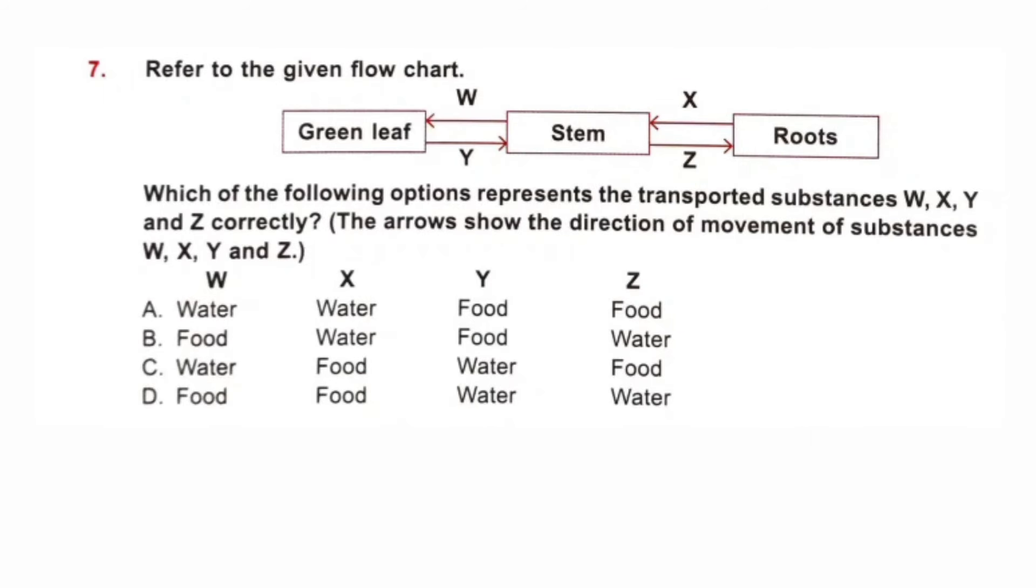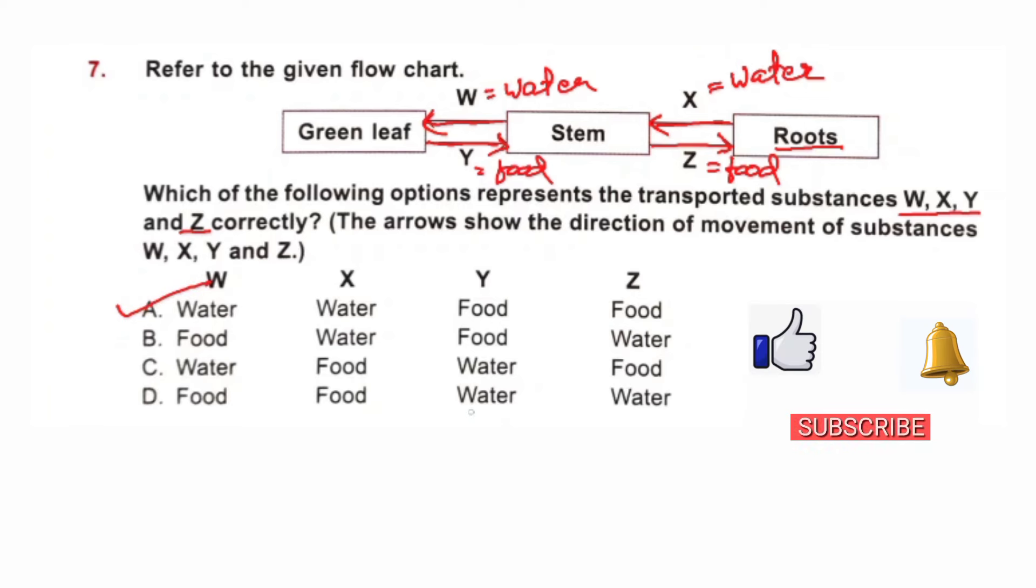Question number 7. Refer to the given flowchart. This is the flowchart. Question is: Which of the following options represents the transported substances W, X, Y, Z correctly? The arrow shows the direction of movement of substances W, X, Y and Z. We know that roots absorb water from the soil and transport it to all parts of the plant through stem. So, X is water which is transferred from root to stem. W also water. It transfers from stem to leaf. In a similar way, Y and Z are food which is prepared by the green leaf and it transfers from the leaves to all parts of the plant. Option A is correct. W and X both are water. Y and Z both are food.